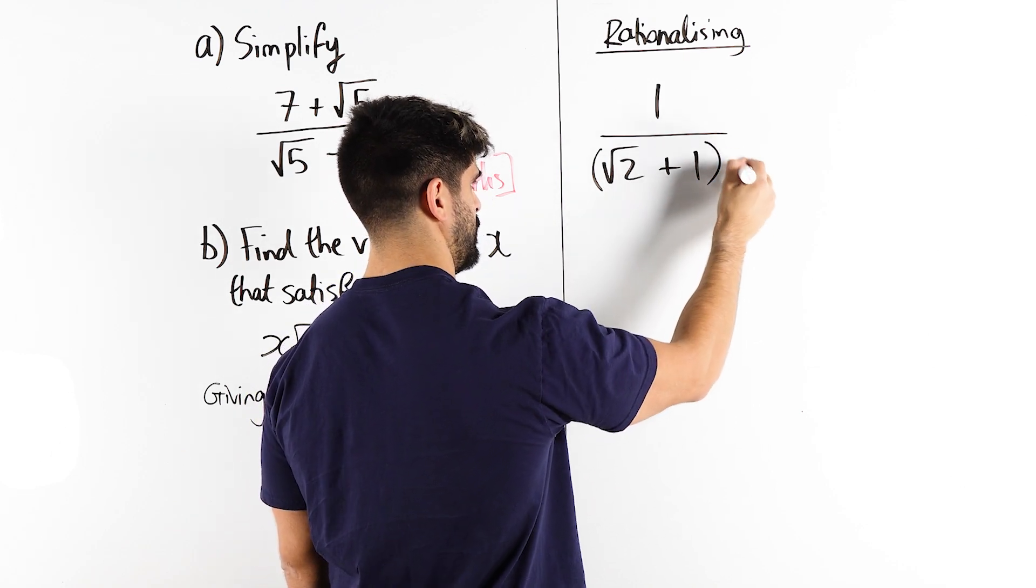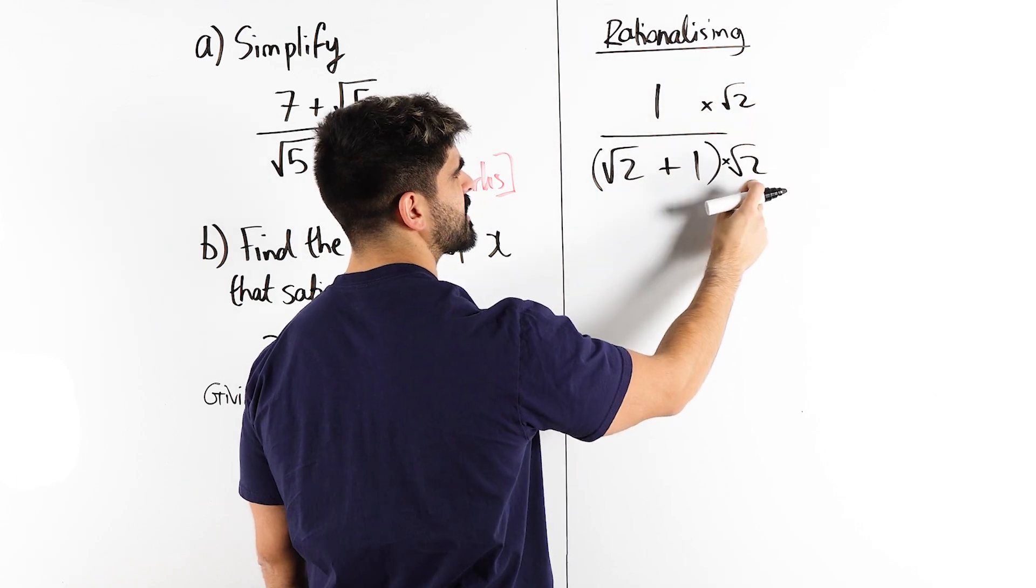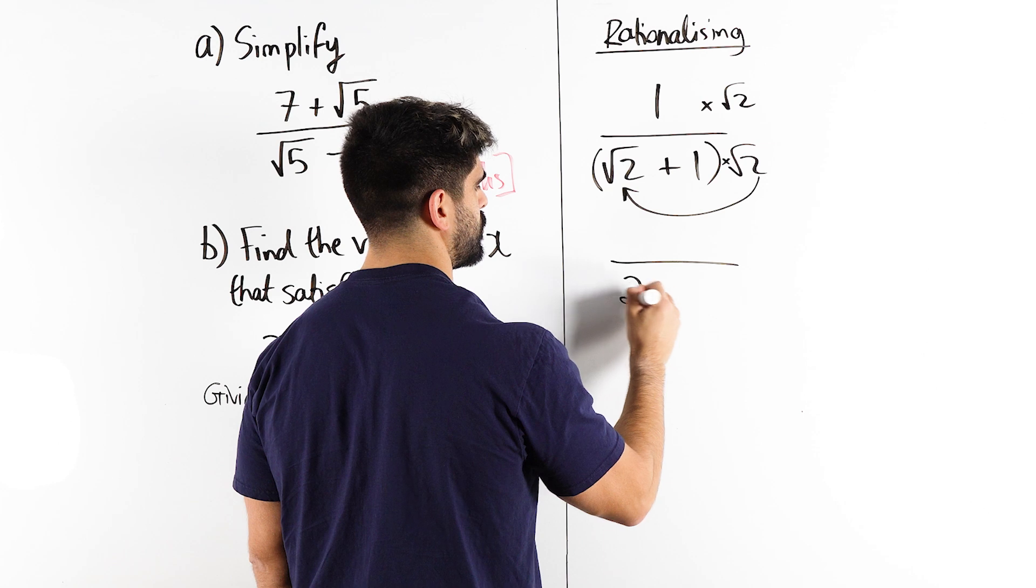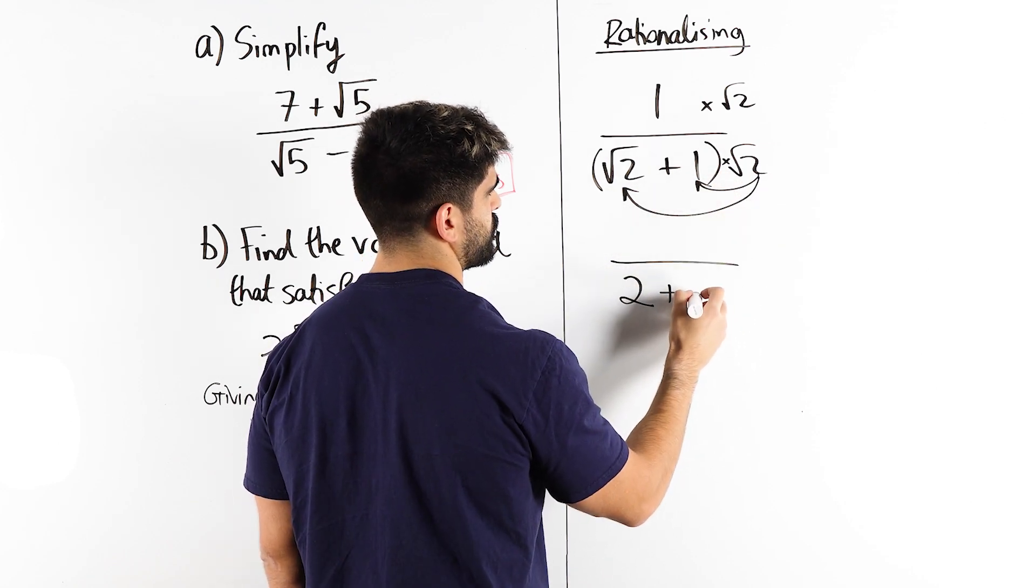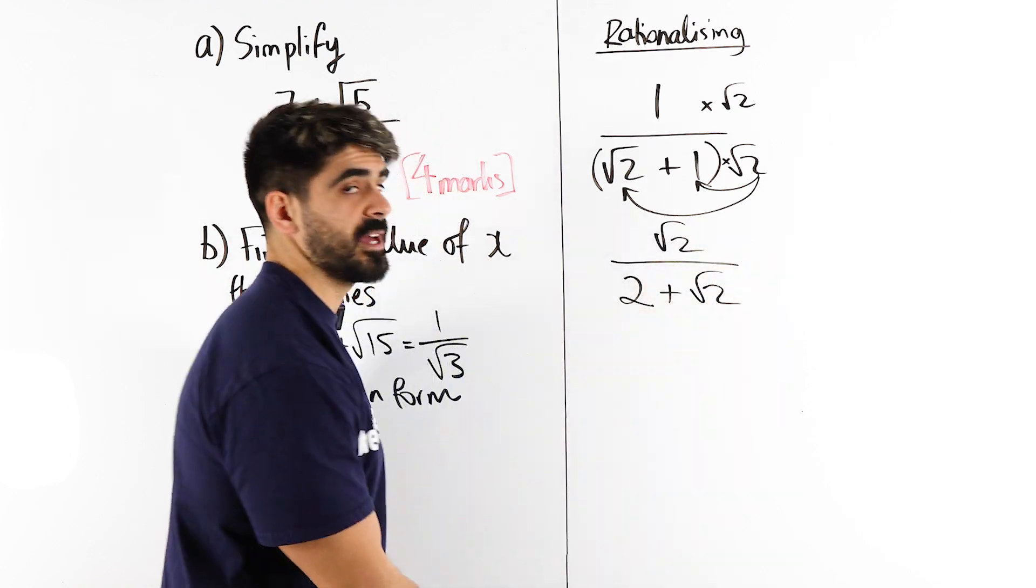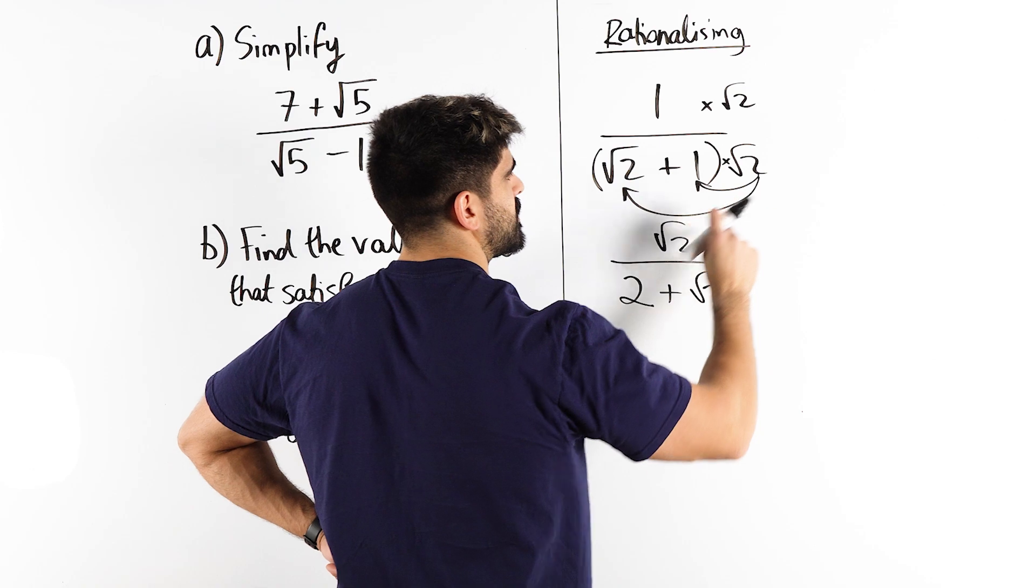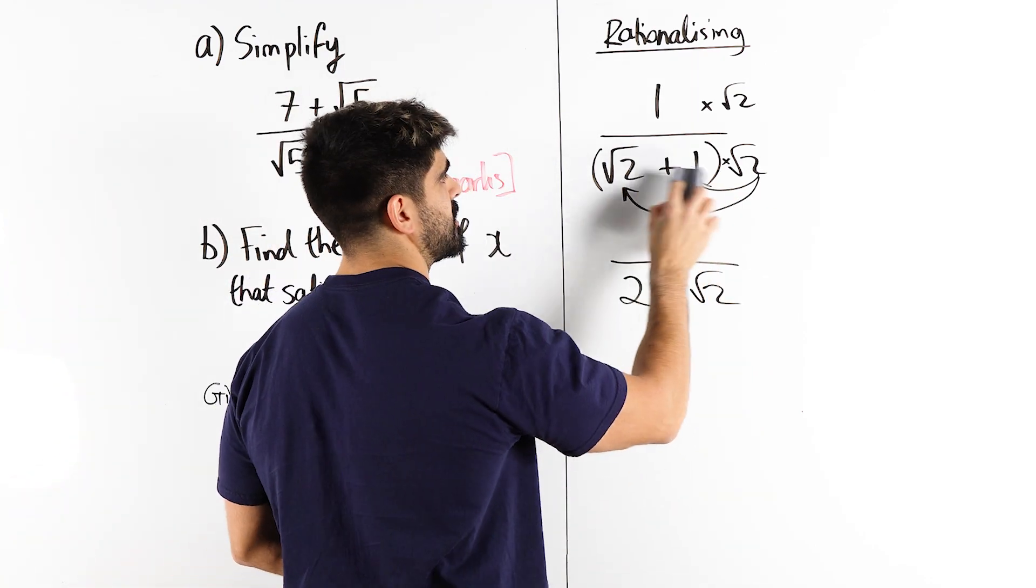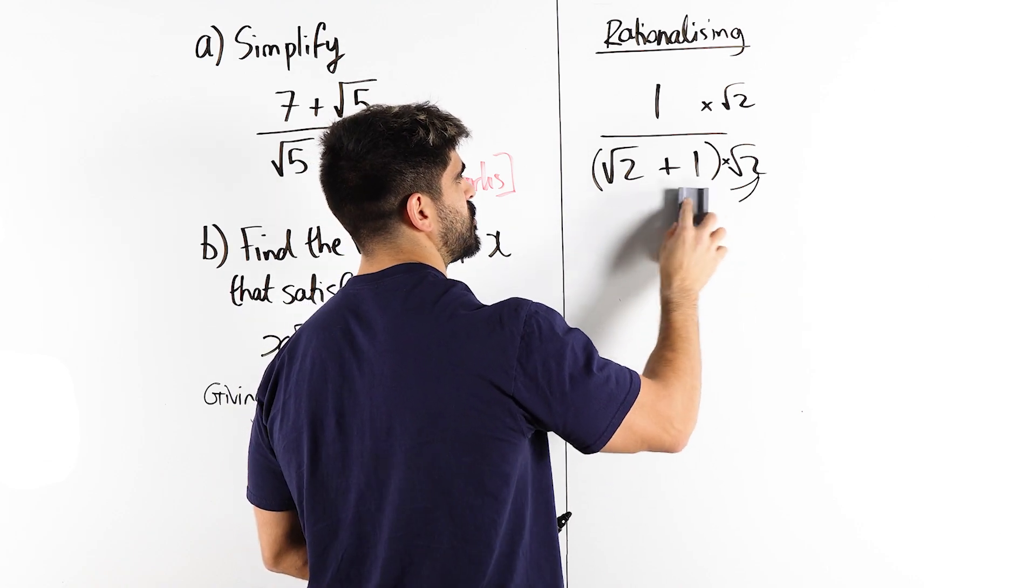Now, if I times by root 2, I would have to expand. Root 2 times root 2 is 2. But I would have to multiply by this. I get 1 times root 2, which is just root 2. And I get root 2 on the top. That has not rationalized it. So multiplying by single terms does not work anymore when it comes to rationalizing denominators with two terms in the denominator. So we need a different strategy.